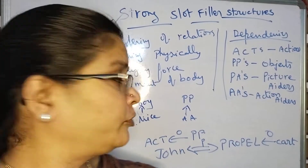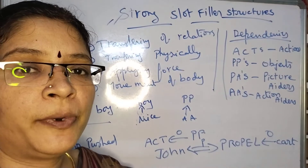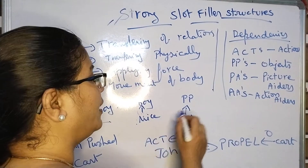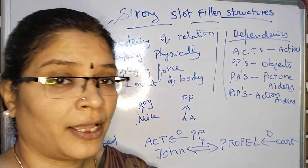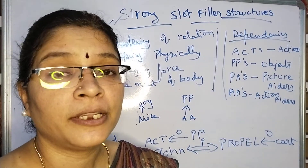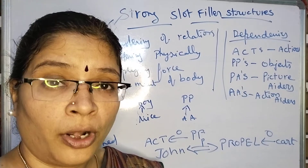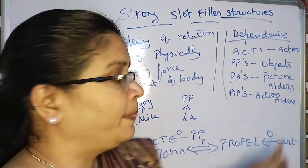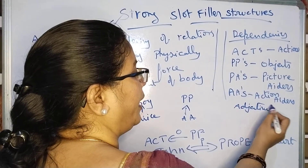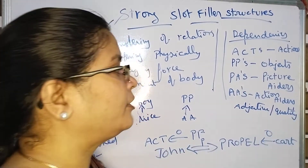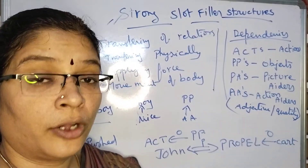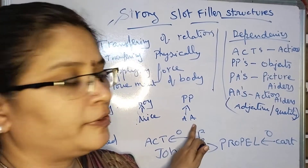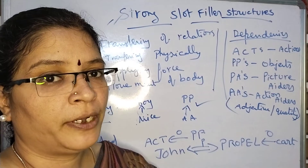Now, the third example: 'a nice boy.' You are representing a boy is nice — adding the adjective nice to the boy. For this, P-P is the object, boy is considered as the object, and action aider is used. Whenever you are going to represent any adjective, like 'John is tall' or 'the boy is nice,' quality of a person is adjective, so it is represented with the help of the action aider.